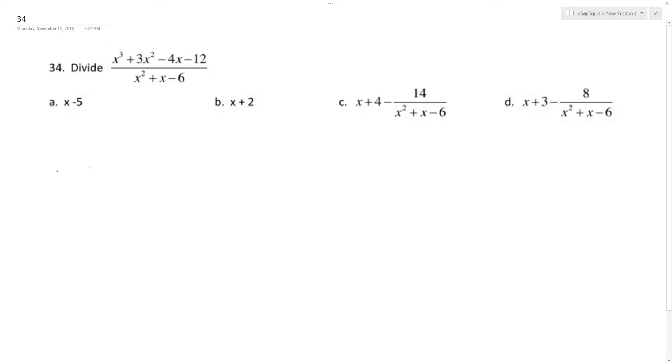So I can rewrite this so I can factor out an x squared term, and I get x plus 3, and then minus 4 quantity x minus 3.